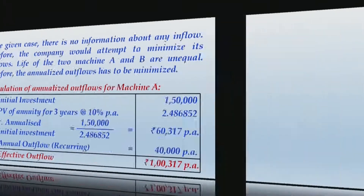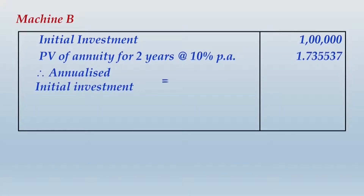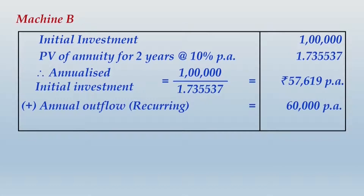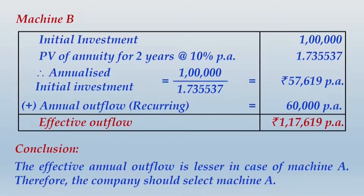For machine B, using the same logic, the annualized amount of initial investment comes to 57,619 per annum. Adding the annual recurring outflow of 60,000 gives an aggregate of 1,17,619 per annum. The annualized effective outflow is higher for machine B. Therefore, the effective annual outflow is lesser for machine A, and the company should select machine A.